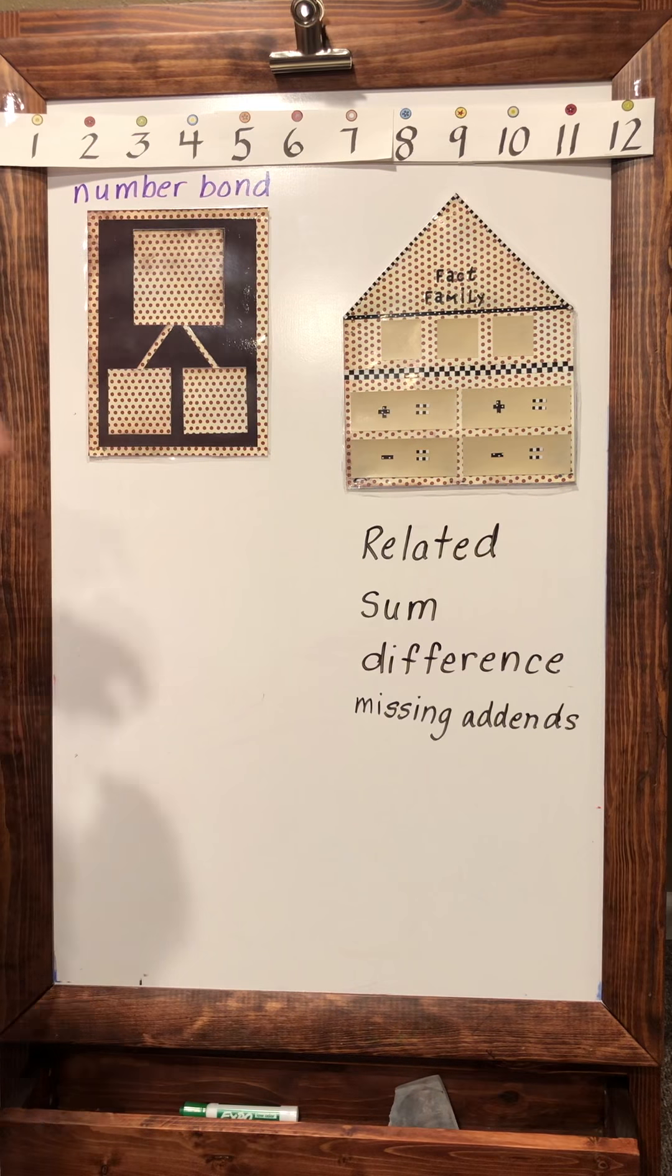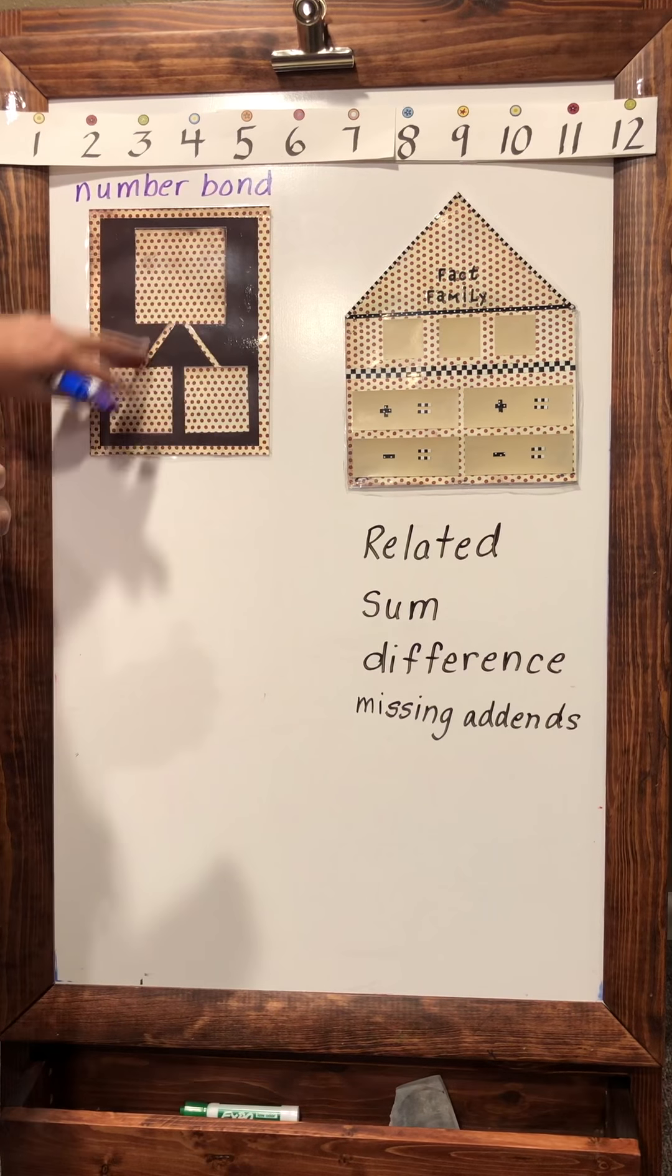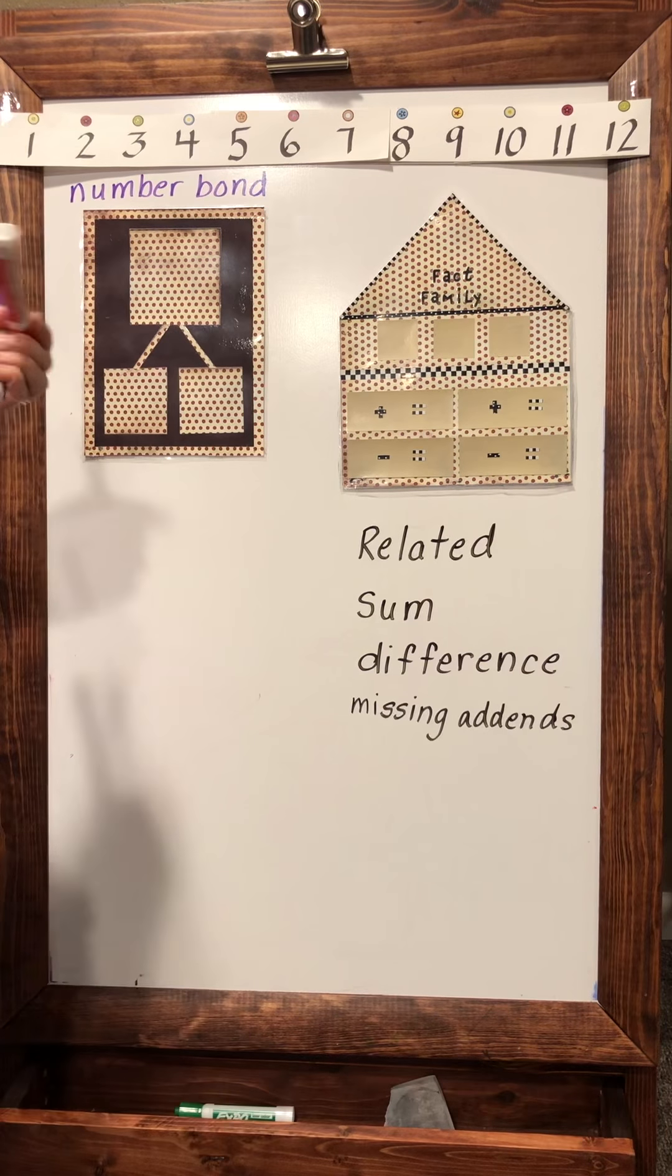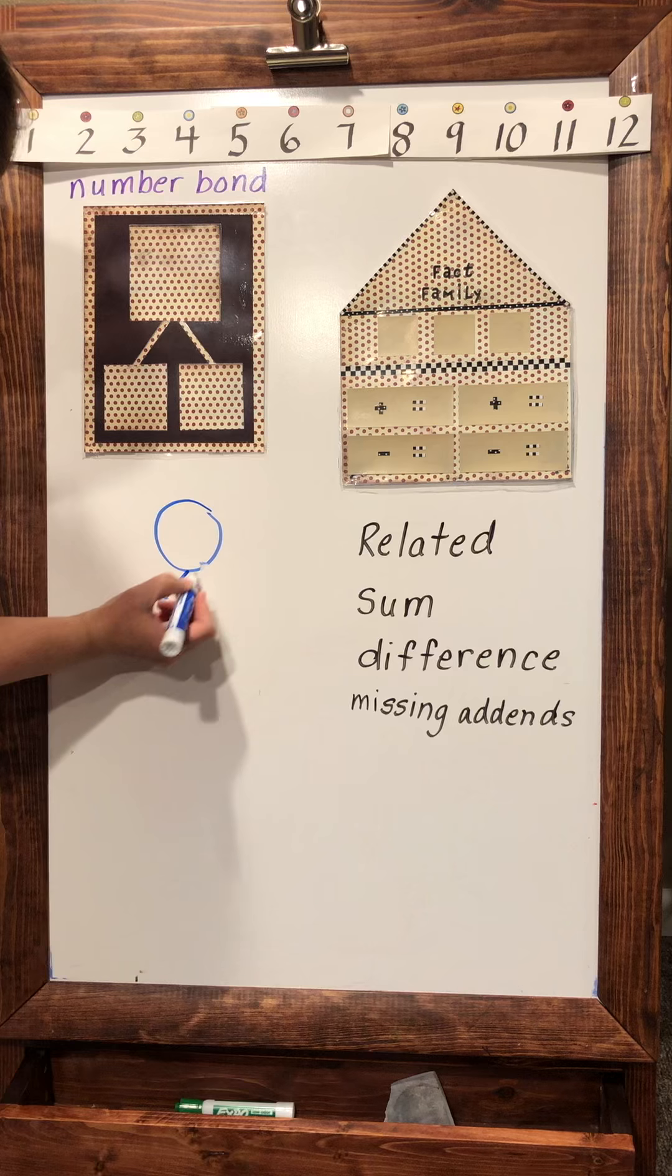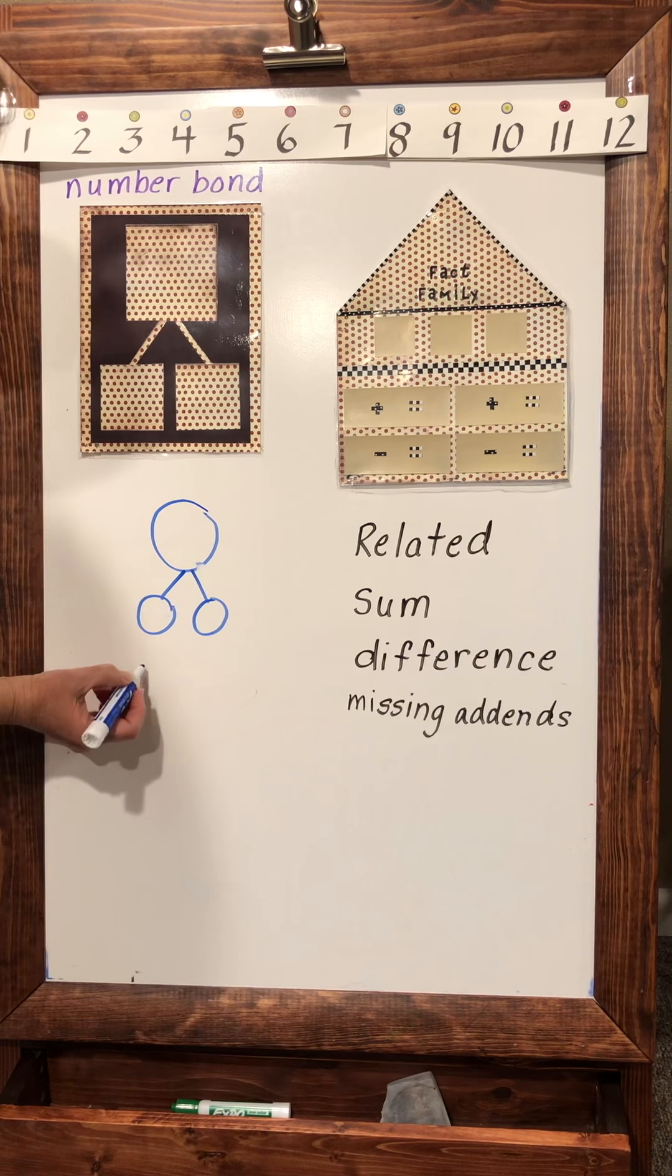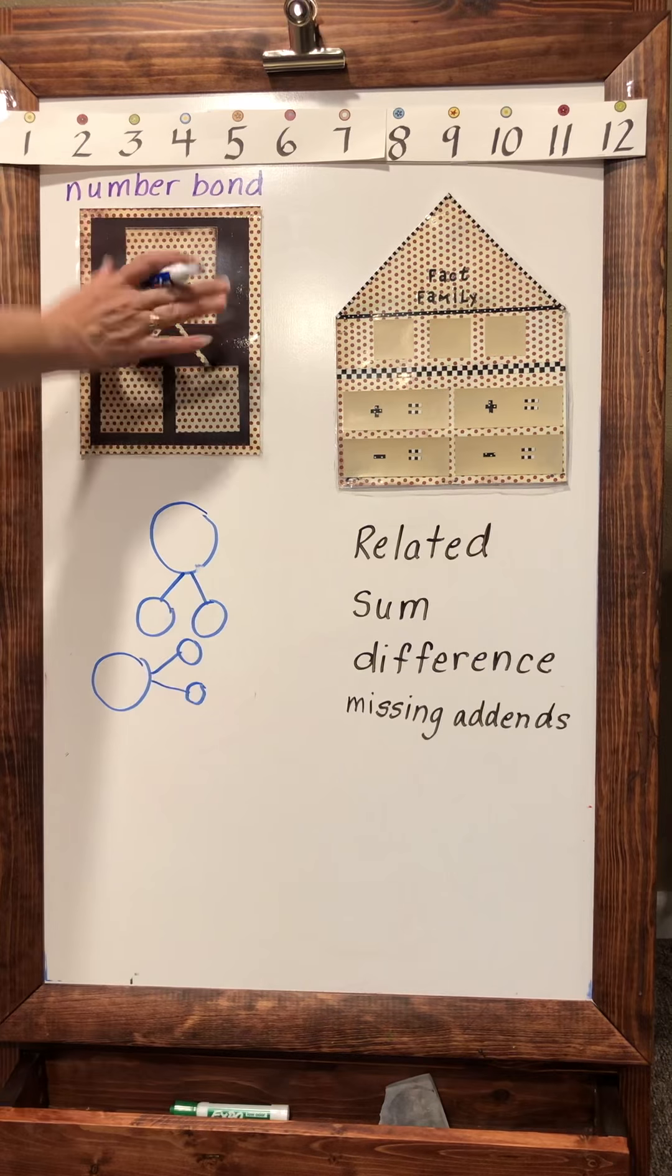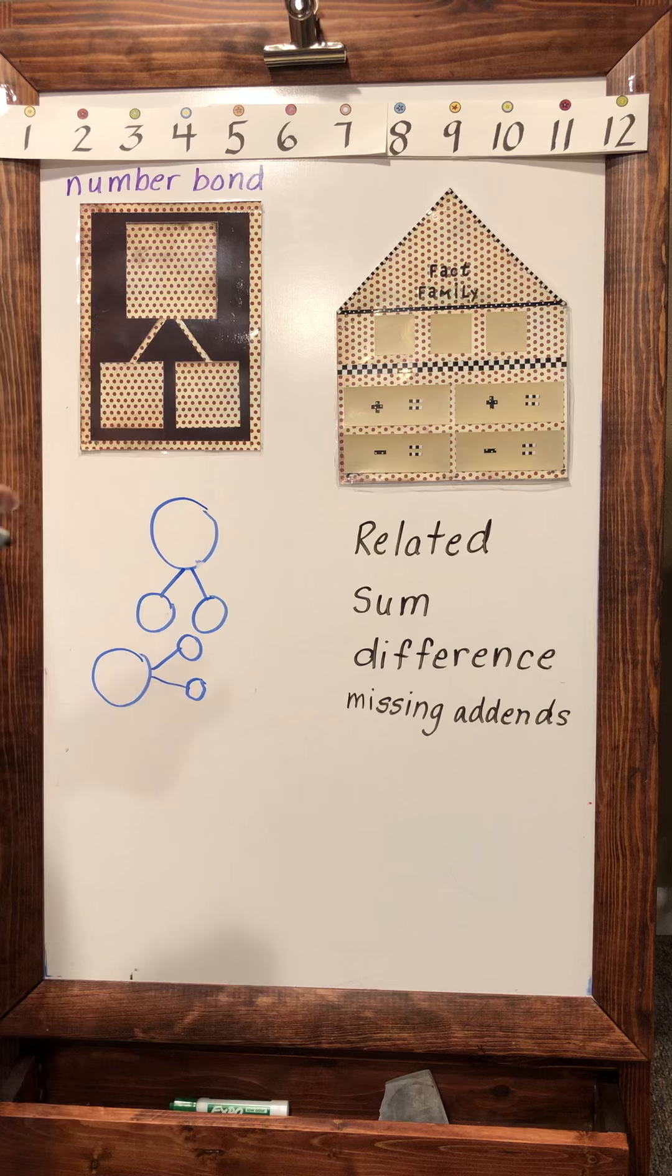I'm going to start by talking about how these squares relate to this fact family. Sometimes in New York math they show circles going down this direction to put the numbers in. Sometimes they have them off to the side going this direction, but it's basically the same thing just turned. It's easier for me to draw circles than squares.